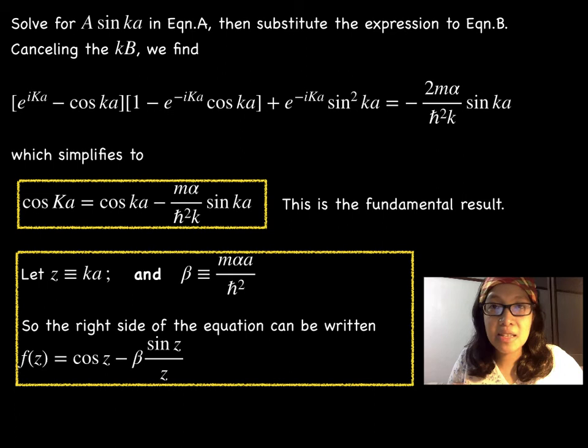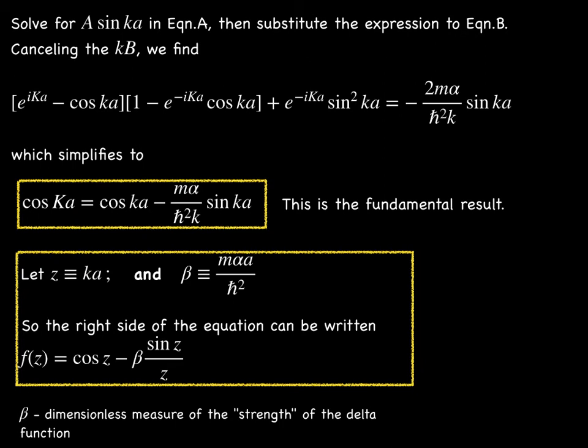Thus, the right side of the formula can be expressed as f(z) equals cos z minus β/z times sin z.